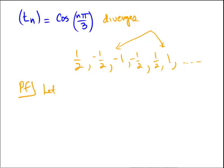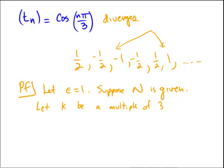So let epsilon equal 1. There is our epsilon. Suppose we have a general N. Suppose capital N is given. Okay, now that we've done that,